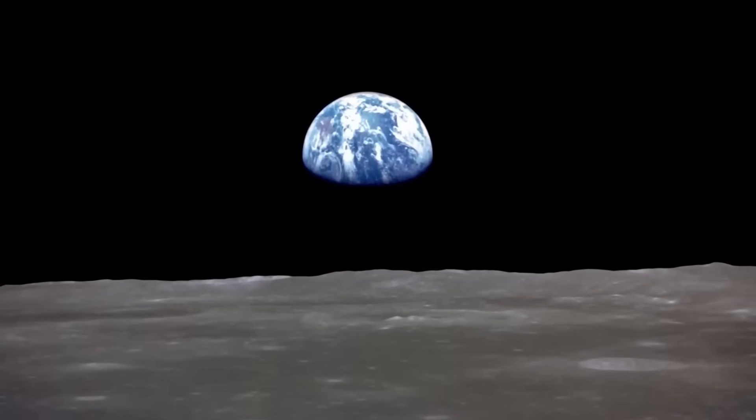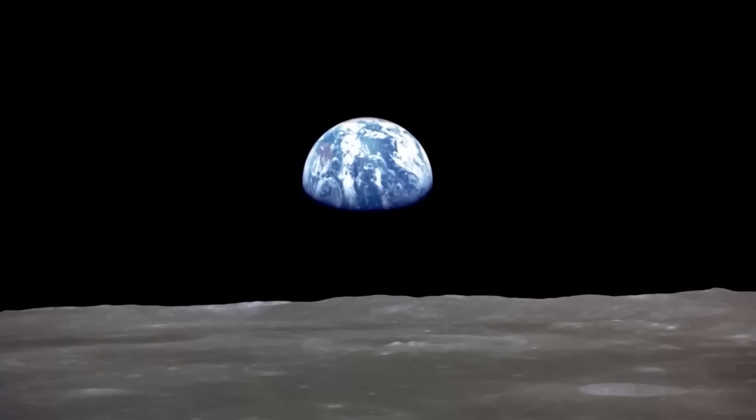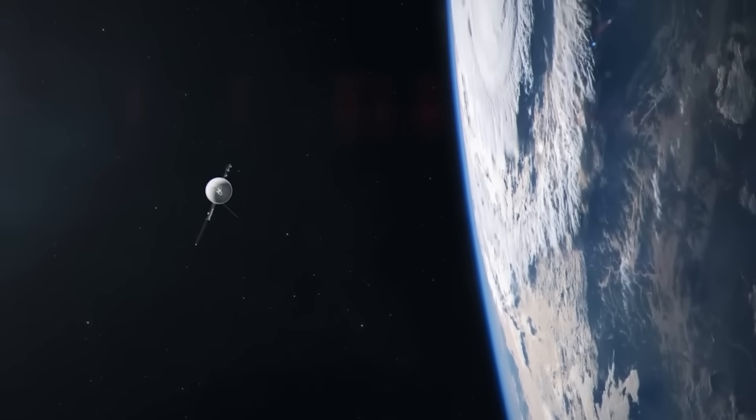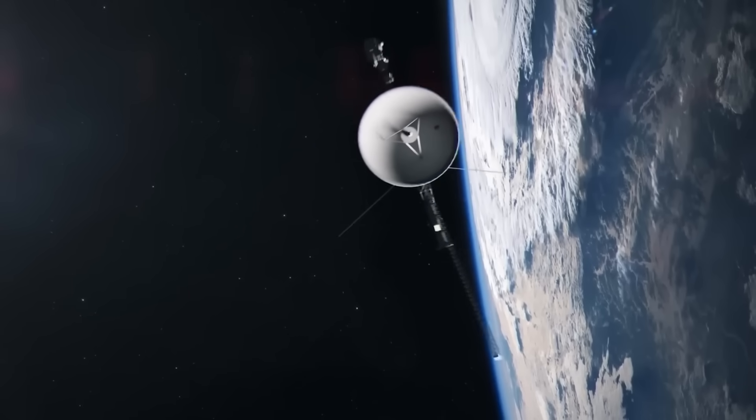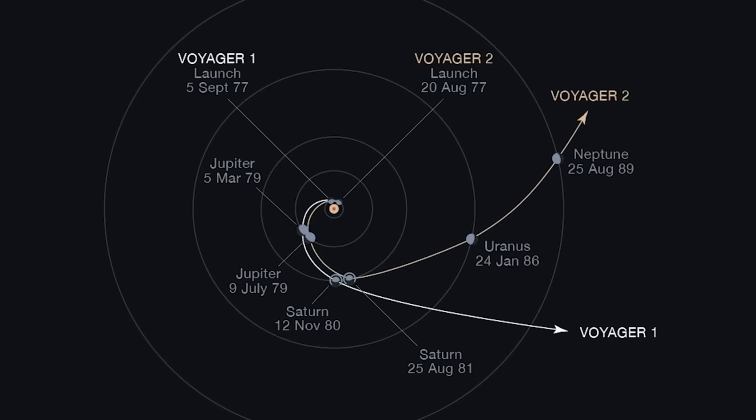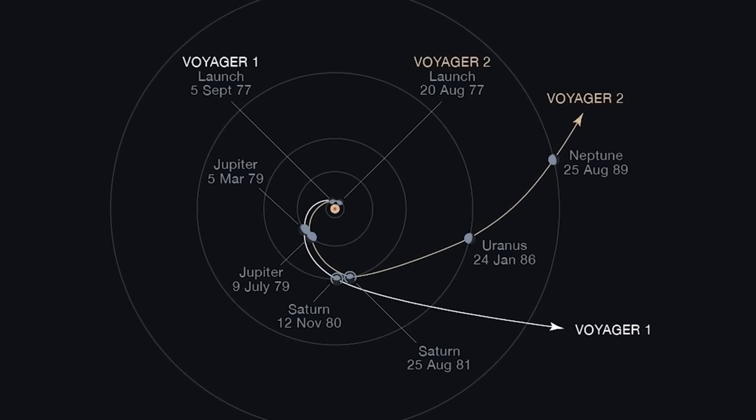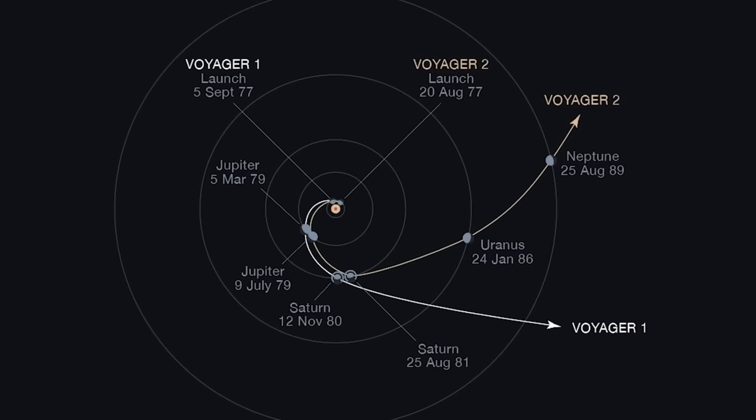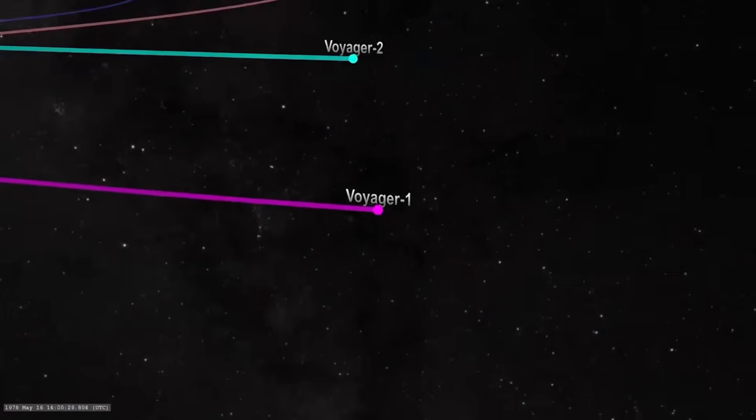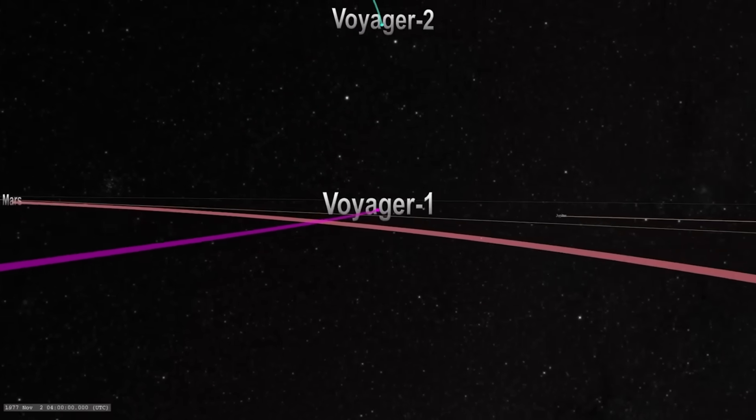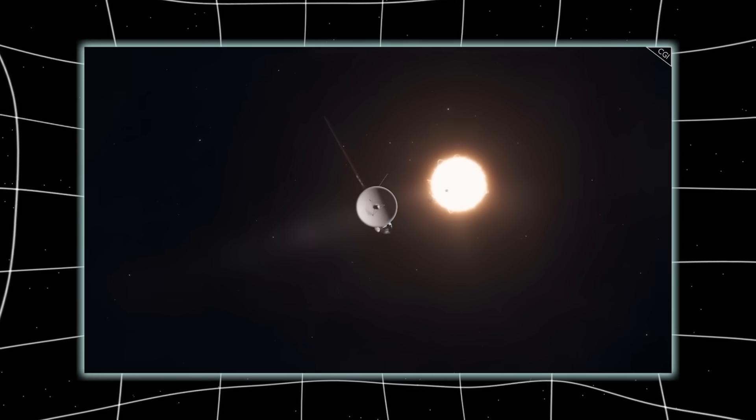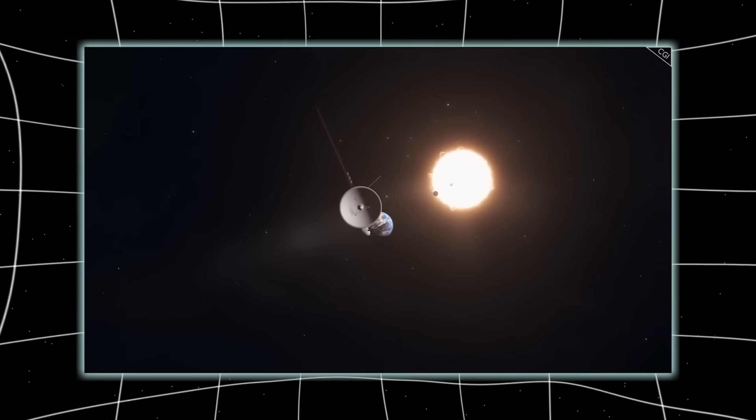When Voyager 2 stepped outside the heliosphere, it began recording fluctuations in radiation levels and plasma density that didn't align with anything previously modeled. These weren't just one-time spikes or occasional irregularities. They were dynamic, persistent, and patterned, almost like a form of weather. The idea that space beyond the sun's reach might contain something akin to weather was previously dismissed as poetic exaggeration. But Voyager 2 was registering waves of high-energy particles, sudden directional changes in the magnetic field, and surges in galactic rays that echoed with a strange rhythm.